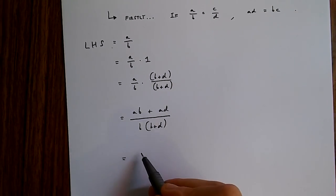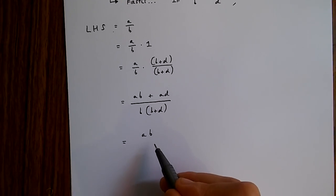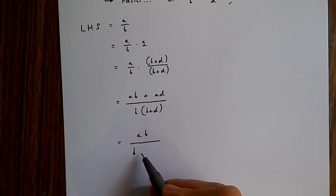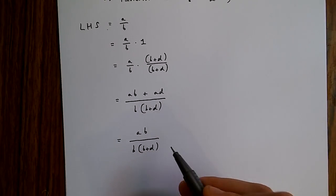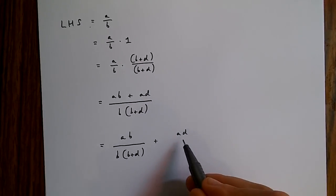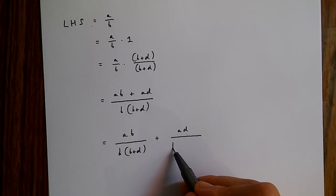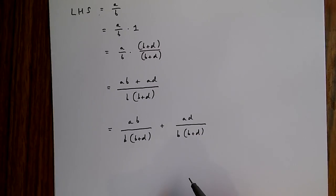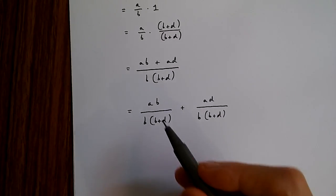Now, if we expand this, we get ab over b times b plus d plus ad over b times b plus d.